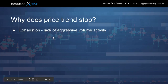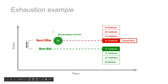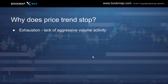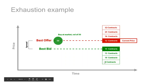Let's go over exhaustion. What is it? It's the lack of aggressive volume activity. We're going to go through the market buy order here of volume 50, which already occurred, leaving 12 contracts on the best offer as current price. Now they sweep the book lower — through 15 contracts, then 13, and then a sell market order of volume 5 occurs into 10 contracts. Note that exhaustion doesn't necessarily mean a lack of liquidity — it's a lack of aggressor volume that makes it exhaustion.